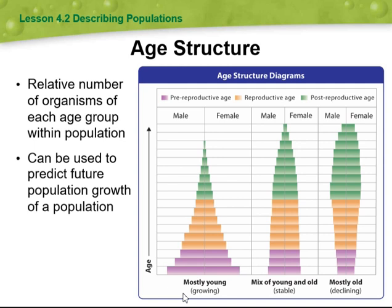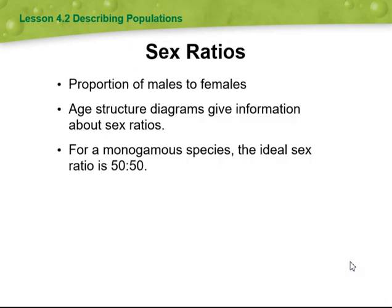A population that is mostly young is considered growing, with the pre-reproductive age being the largest group. A mix of young and old represents a stable population, with post-reproductive ages at the top. A population that is mostly old is declining, with post-reproductive ages dominating at the top and pre-reproductive ages declining.